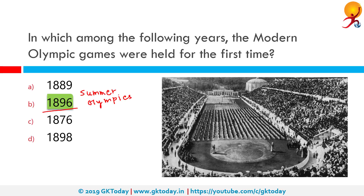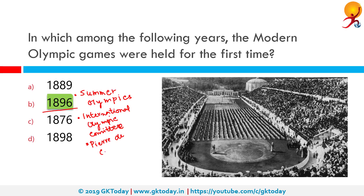The games were held by the International Olympic Committee, which still holds the games today. It was also created by Pierre de Coubertin. The games were held in Athens, Greece, which is where the ancient Olympics were held. The key date to remember is 1896, between 6th and 15th April.